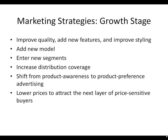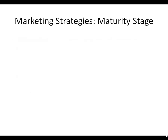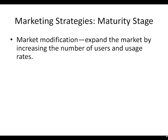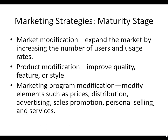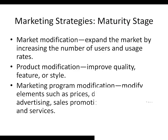In the growth stage, you should improve quality, add new features, enter new segments, start to increase distribution coverage, and try to move from awareness to preference advertising. You've already got early adopters buying your products — it's time now to lower your price to go after more price-sensitive consumers. In the maturity stage, somehow modify the market by expanding it — increasing the number of users or the rate at which existing users use the product. Maybe modify the product, or change your marketing by promoting in a different way or selling in a different location.